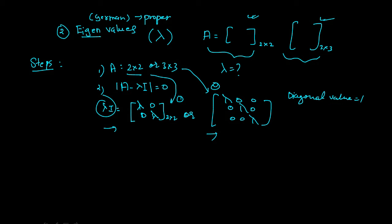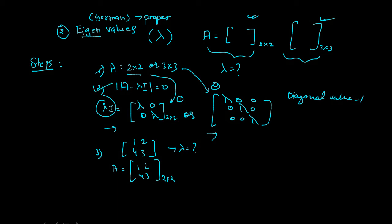Now let's move forward to the third step with an example. Let's say I have the matrix A = [1, 2; 4, 3]. Find the eigenvalues of that. Apply step 1: my matrix A is 2×2 — [1, 2; 4, 3]. Then go to the second step: find the determinant of A minus lambda I equals 0.